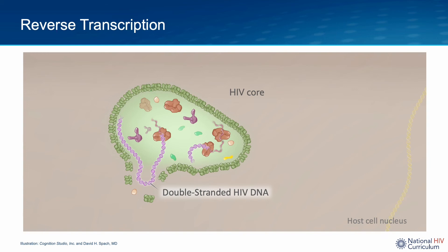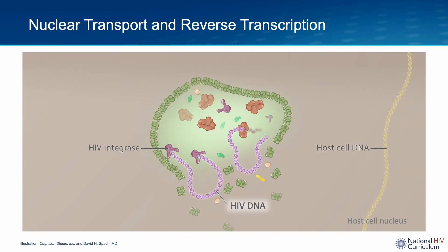As more of the stiffer double-stranded HIV DNA continues to form, the structural integrity of the HIV core breaks up further. Eventually the HIV core breaks down completely, releasing the HIV DNA into the host cell nucleus. The HIV DNA is now ready for integration, the next phase in the HIV replication cycle.